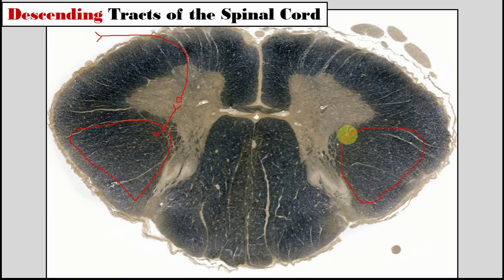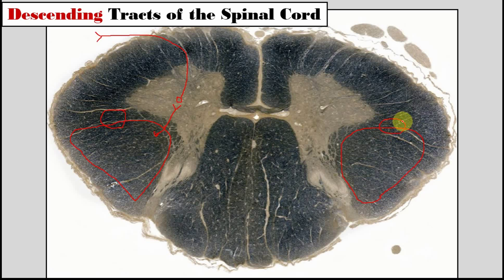Just ventral to the lateral corticospinal tract, and slightly overlapping, is the rubrospinal tract. These axons are traveling from the red nucleus down the spinal cord.